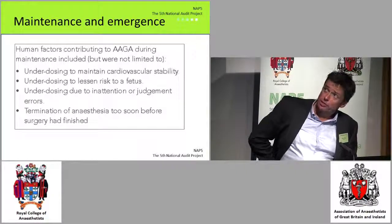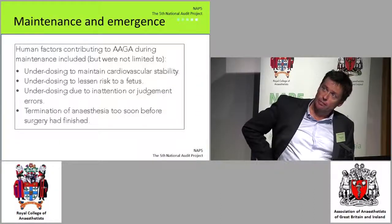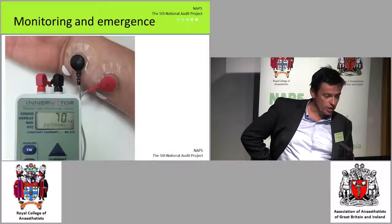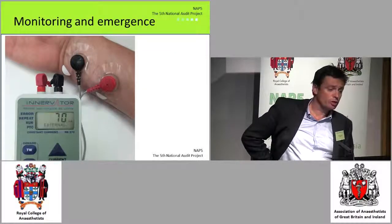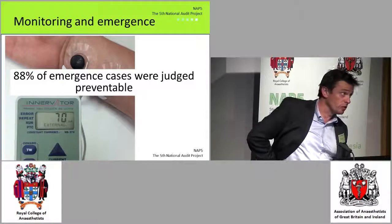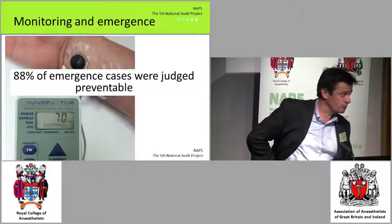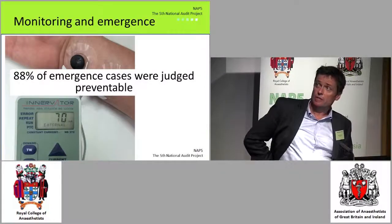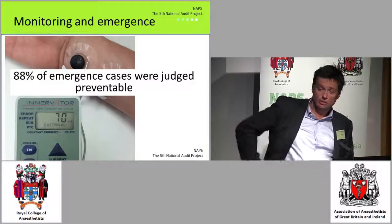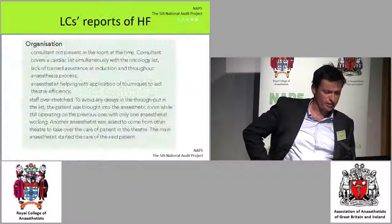In maintenance and emergence there's a slightly smaller list of major factors, as we're in an area of greater stability. But 88% of emergence cases were judged to be preventable — close to 90%. The triad involves not using muscle relaxant when you don't need to, using monitoring, and using reversal appropriately.